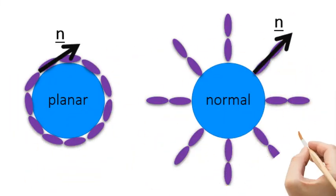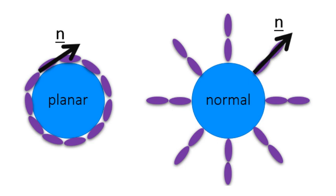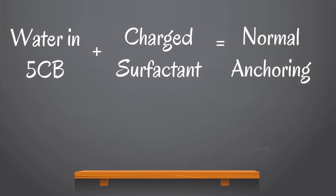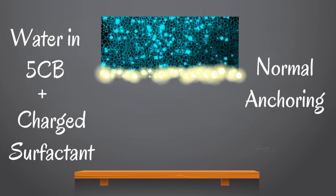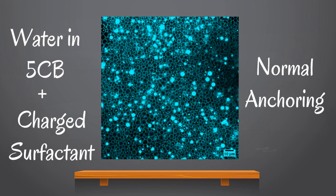But if we want a more stable emulsion, maybe we need to change the anchoring. There are two types of anchoring: planar and normal. So how about we try normal anchoring? We achieve this by adding a charged surfactant. These just change the surface properties between the droplet and the liquid crystals. When we add just a tiny bit of this ingredient, our whole structure changes in this emulsion. You can see the water in blue forms a honeycomb structure with liquid crystal droplets inside.